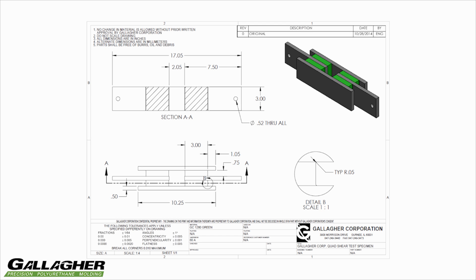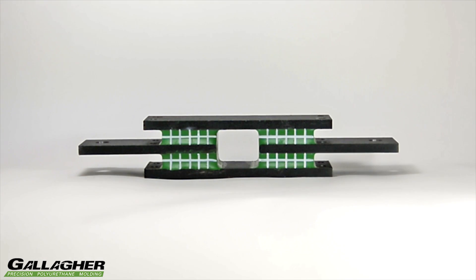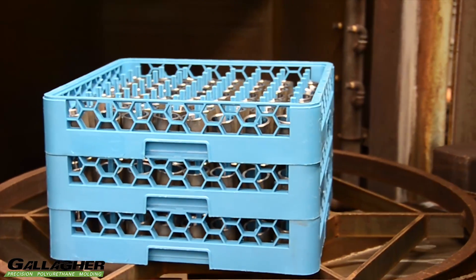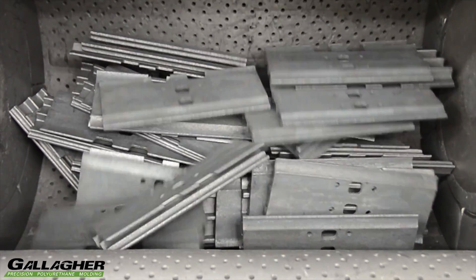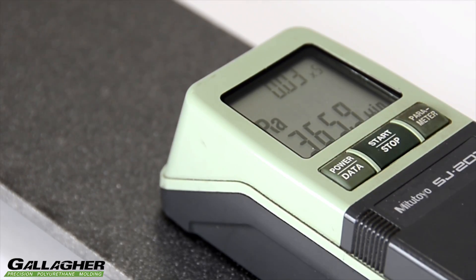GC1280 is an MDI polyether polyurethane with a hardness of approximately 80 Shore A. The polyurethane is bonded to the steel plates following Gallagher's proprietary bonding procedure. The steel plates are cleaned to remove any surface contaminants and then grit blasted to achieve an anchor pattern of at least 200 micro-inch finish.